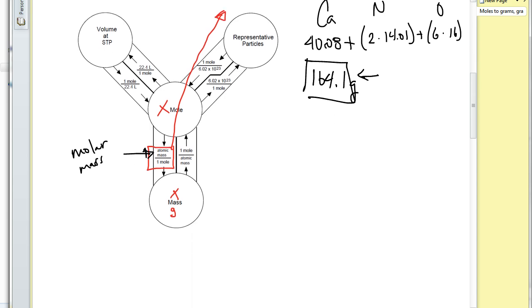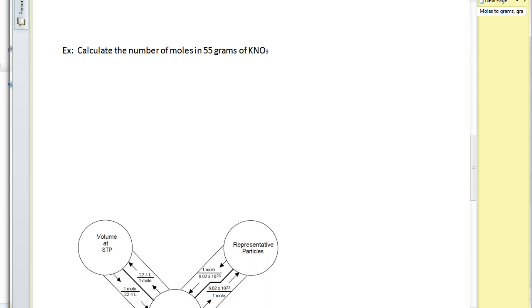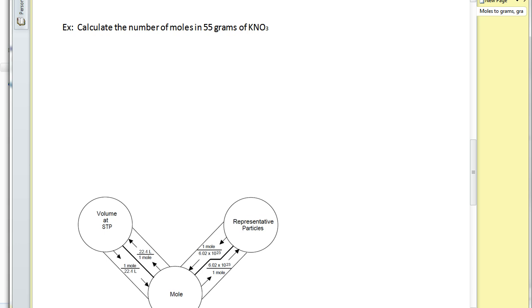Okay, let me scroll down here. We have another example for you. And the next one is calculate the number of moles in 55 grams of potassium nitrate. So again, first thing we want to do is we want to identify our known. And our known is 55 grams of potassium nitrate. So I'm going to go like this. 55 grams of potassium nitrate.